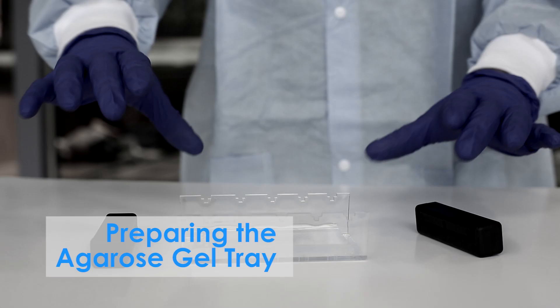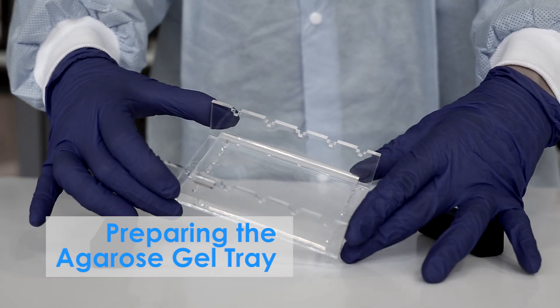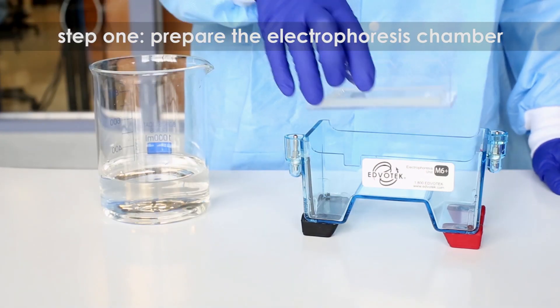Edvotek instructional videos: performing electrophoresis. In this video we're going to perform electrophoresis in five easy steps. Watch our video preparing the agarose gel tray. Before starting this experiment, step one: place the gel tray into the electrophoresis chamber.